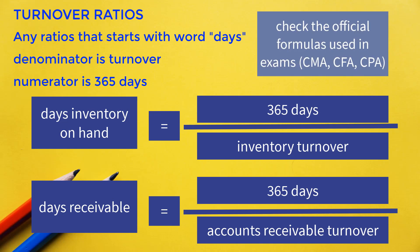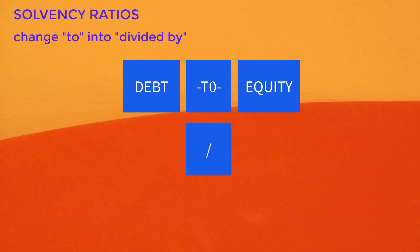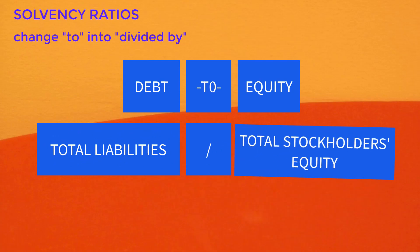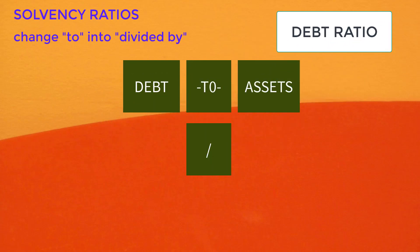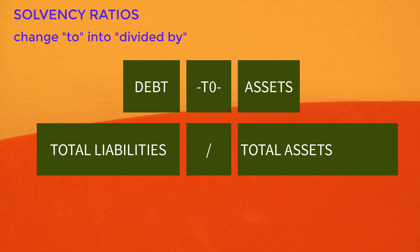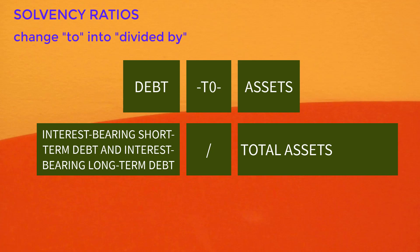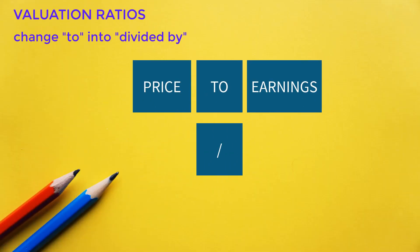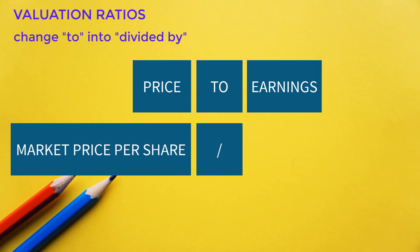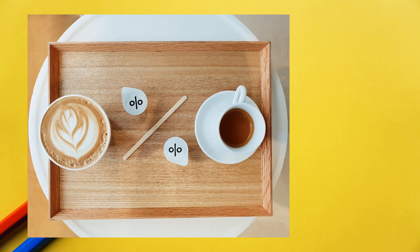The numerator for days ratios is 365 days — though some textbooks use 360 days, so check the textbook used in your classroom and the official formulas used in exams such as CMA, CFA, and CPA. The next technique is simply changing 'to' into 'divided by.' For example, in the debt-to-equity ratio, 'debt' means total liabilities and 'equity' means total stockholders' equity. For the debt-to-assets ratio (also known as the debt ratio), 'debt' means total liabilities and 'assets' means total assets. Note that some textbooks define debt as only interest-bearing short-term and long-term debt. For the price-to-earnings (P/E) ratio, the numerator is market price per share and the denominator is earnings per share — the formula is in the name itself.